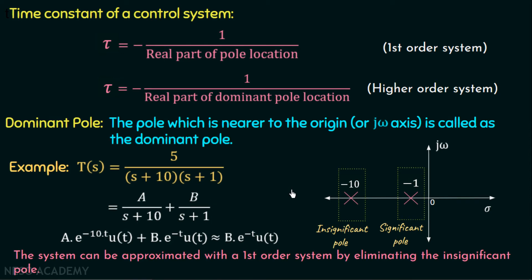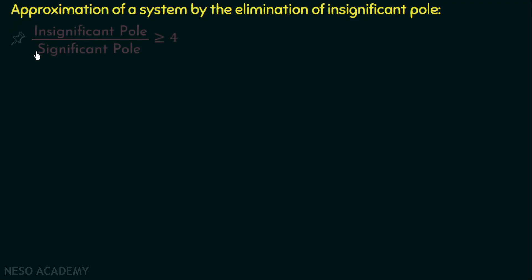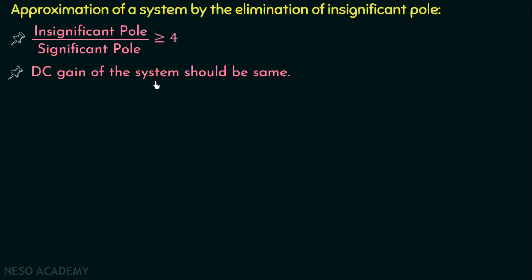Now that we understand the dominant pole concept, we will look at how to approximate a higher order system by eliminating the insignificant pole. There are two conditions to check. Condition 1: the ratio of the position of the insignificant pole to that of the significant pole should be greater than or equal to 4. Condition 2: the DC gain of the system should be the same. If these conditions are not satisfied, we cannot approximate the system.